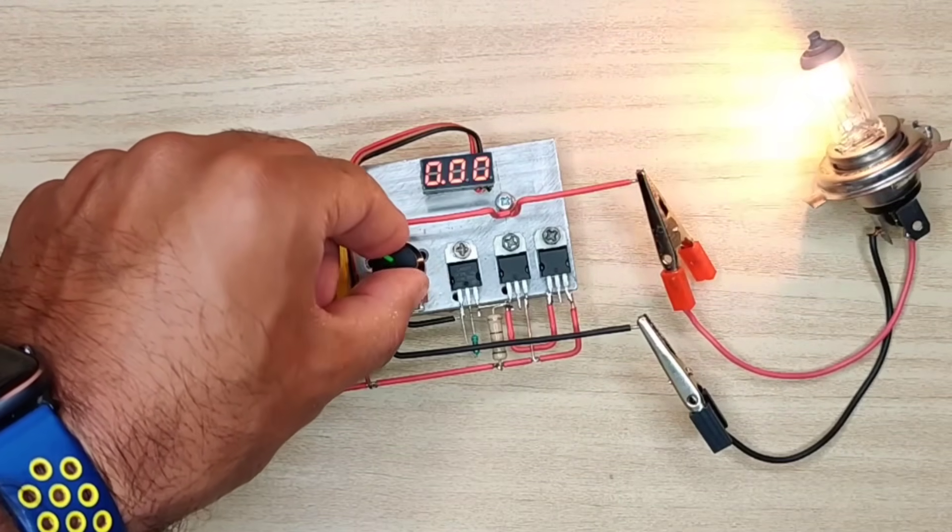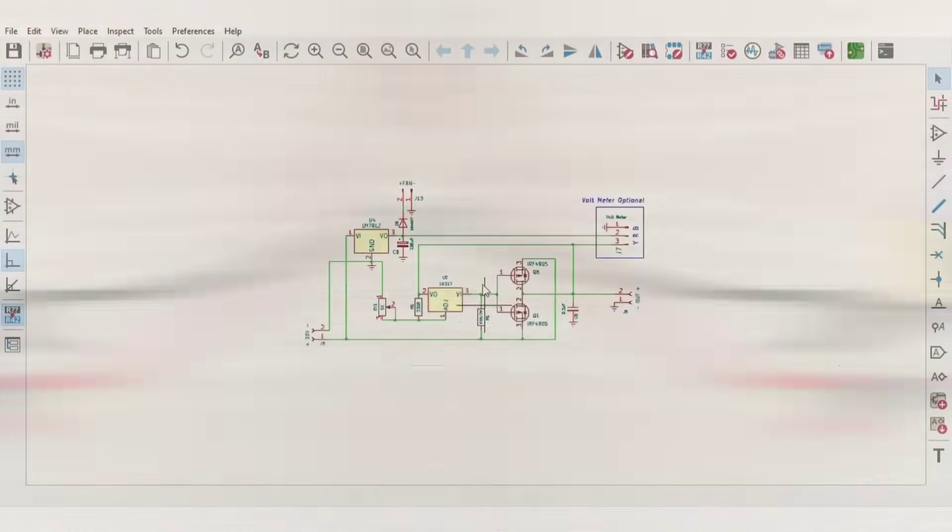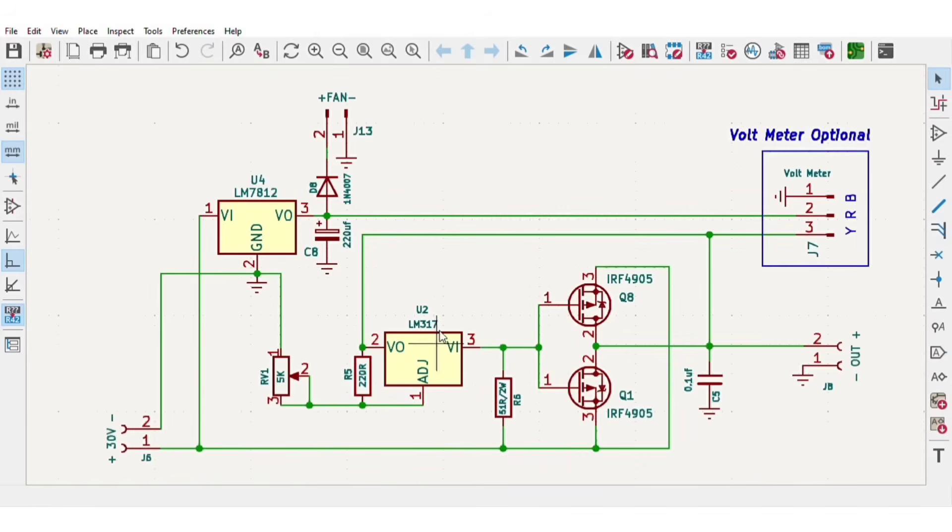So I simply modified the circuit diagram. This circuit is based on the LM317 IC. Since the LM317 can only give 1.5 ampere output current, I used MOSFETs to bypass the current from input to output while voltage is still controlled by the LM317 IC. Also I added another 12 volt regulator for driving the fan and a DC voltmeter to measure the output voltage.